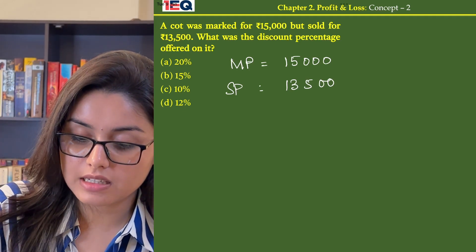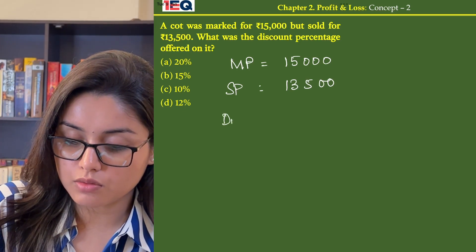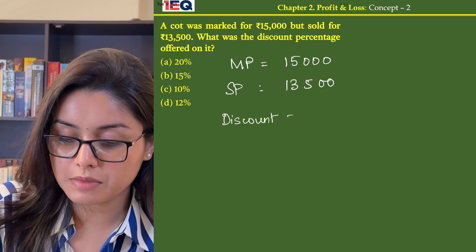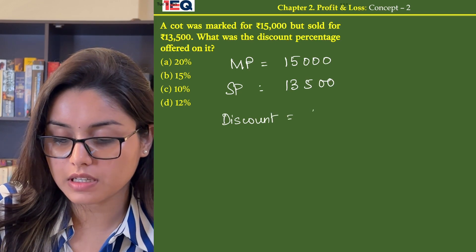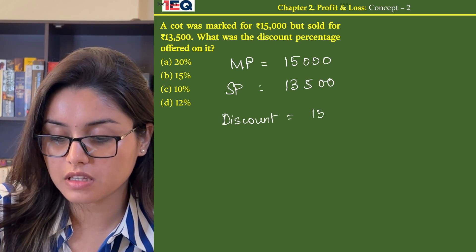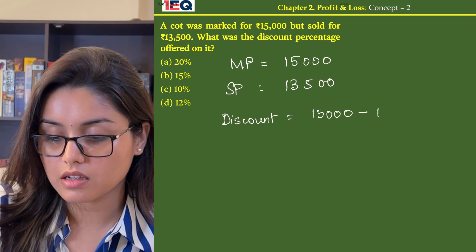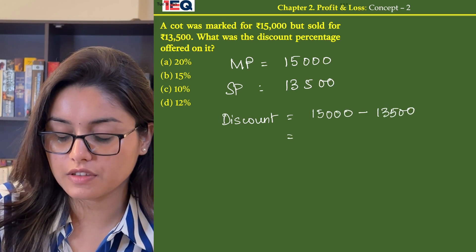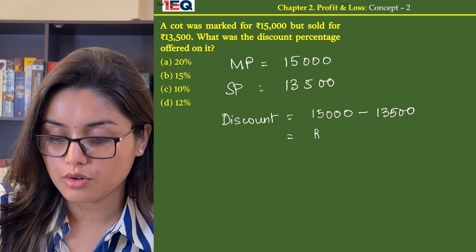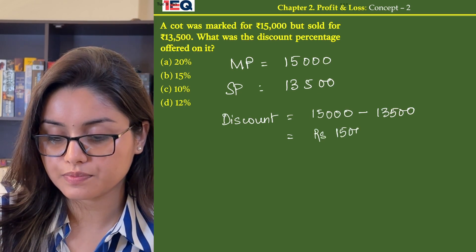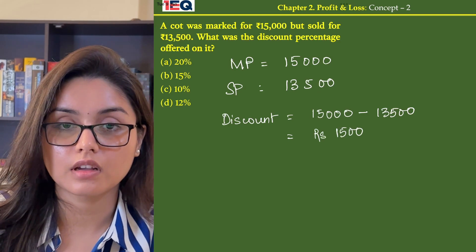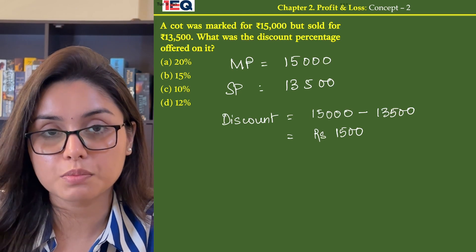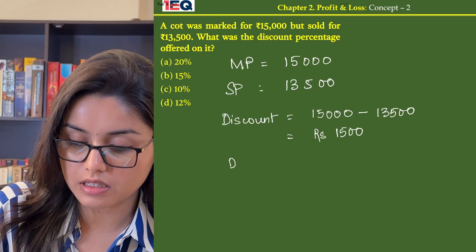In order to find the discount percentage, we first need to find the discount amount. The discount amount is the marked price minus the selling price, that is 15,000 minus 13,500, which gives us rupees 1,500.